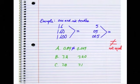In example B, 7.2 is seven and two tenths. And 7.20 is also seven and two tenths. So those are equal.